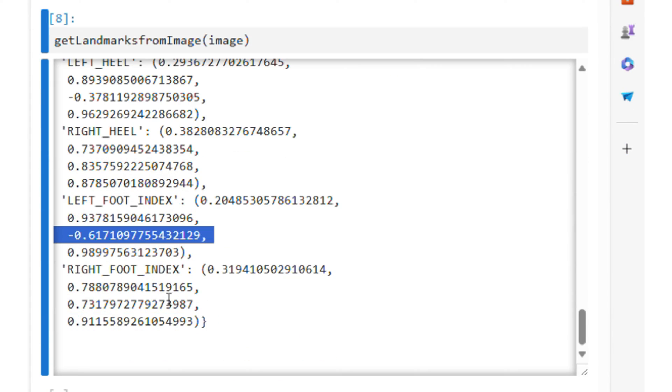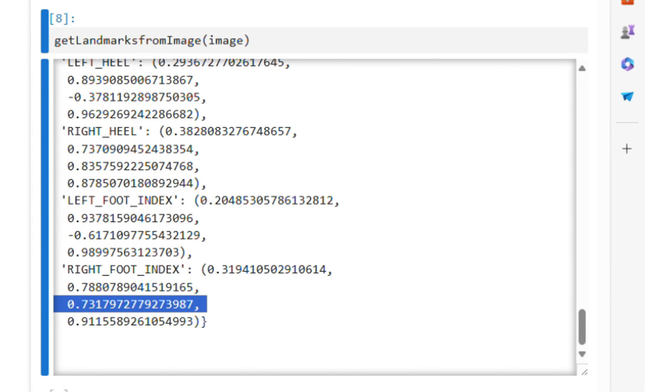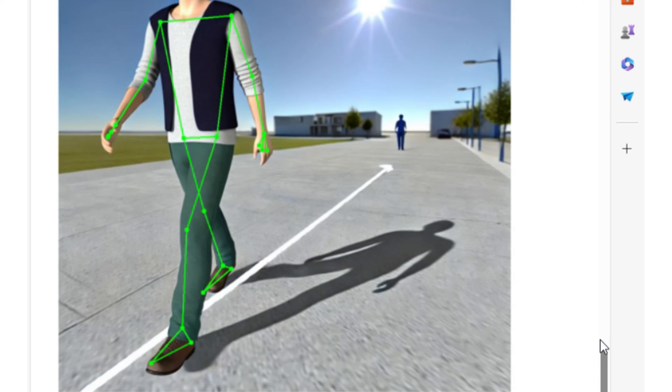Here, the left foot index has a negative z value and the right foot index has a positive z value. So that means in the image the left foot is closer to the camera, which is correct.